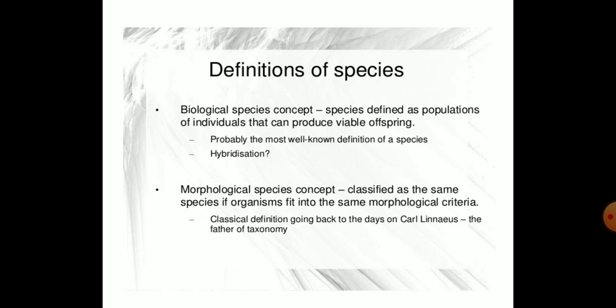Coming to the morphological species concept: organisms are classified as the same species if they fit the same morphological criteria, as defined by Carl Linnaeus, who is considered the father of taxonomy.